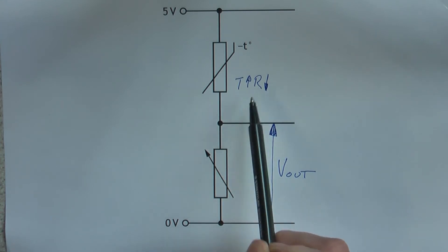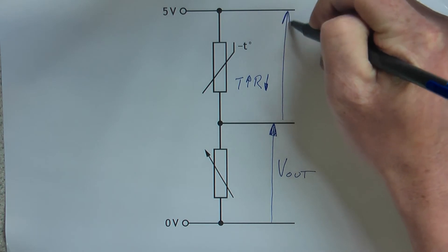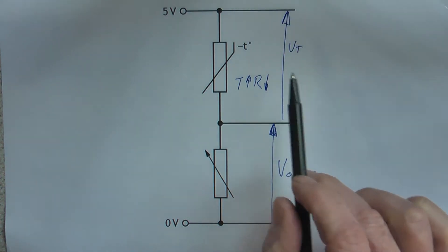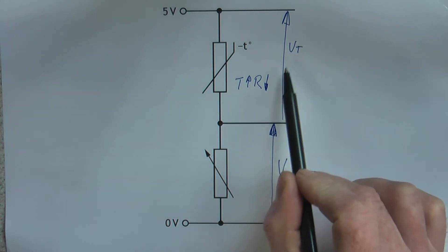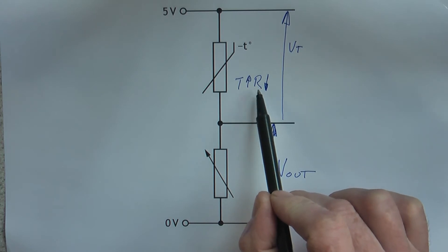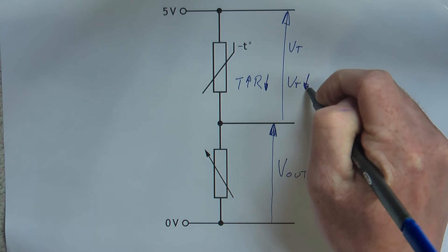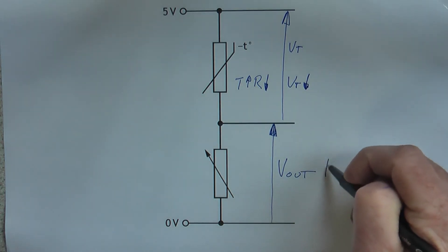As the temperature goes up, the resistance goes down. There's another voltage here. I'll call it Vt. So as the temperature goes up, the resistance goes down. Vt is going to follow that resistance. Vt is going to go down as well. And if Vt is going down, V_out will go up.